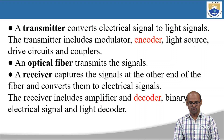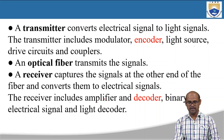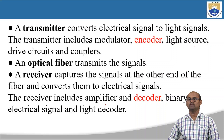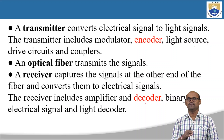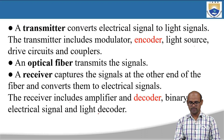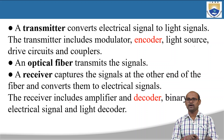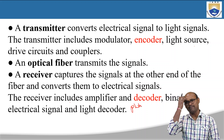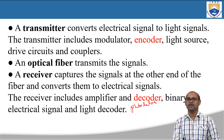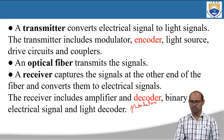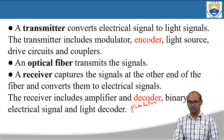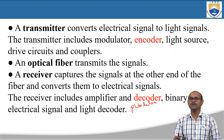Once the light signal is received in the receiver, it must first be converted into an electrical signal. The electrical signal is then decoded, and finally it will be converted into an audio message — whatever we gave as input signal. That is why there are components in the receiver: an amplifier to amplify the received signal, a decoder, and a binary electrical signal decoder.